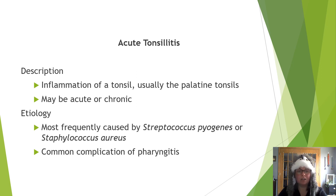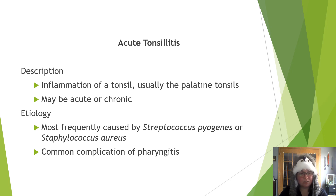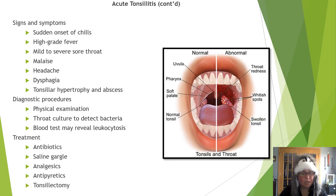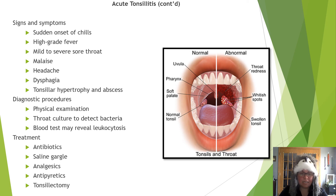Let's go back up the respiratory tract and talk about acute tonsillitis — inflammation of the tonsils, usually affecting the palatine tonsils, acute or chronic. The most frequent cause is bacterial — streptococcus pyogenes or staphylococcus aureus — and it's a common secondary complication to pharyngitis. Signs and symptoms include sudden onset of chills, high-grade fever, mild to severe sore throat, malaise, headache, dysphagia, and tonsillar hypertrophy or abscess. Diagnosis requires a physical exam and throat swab for culture; blood tests may reveal elevated leukocytes. Treatment includes antibiotics, saline gargles, analgesics, antipyretics, and possibly tonsillectomy.